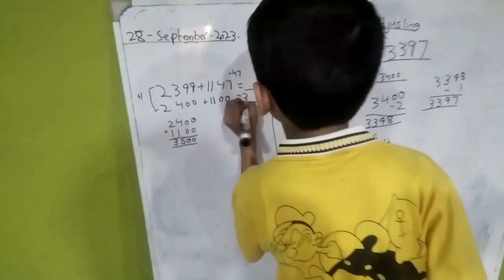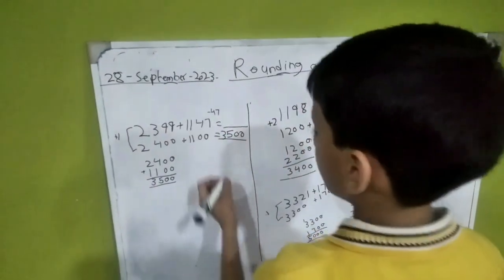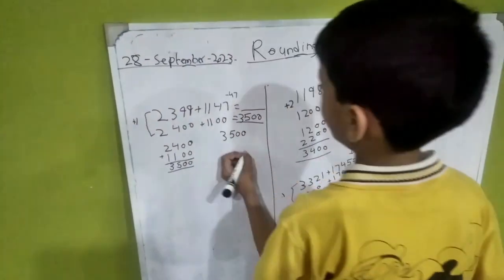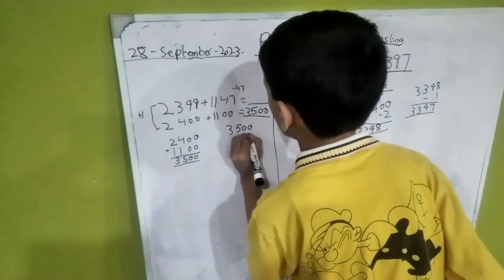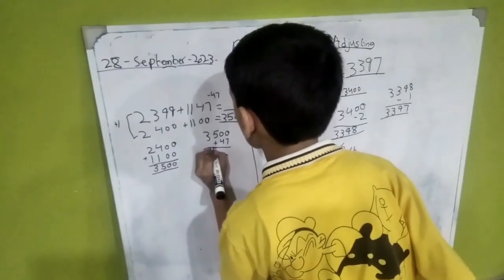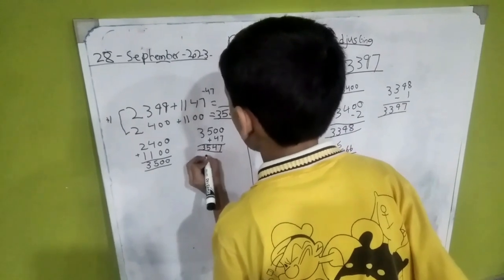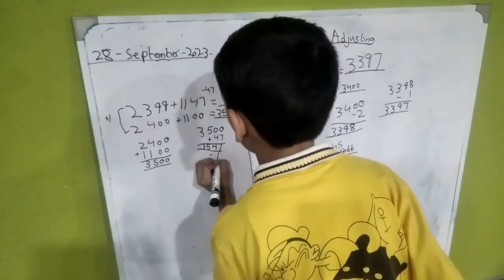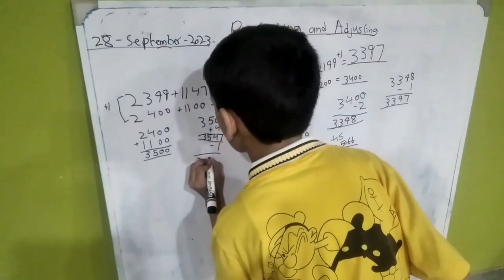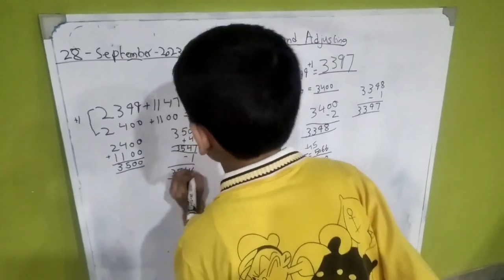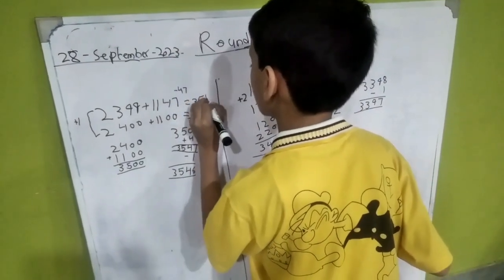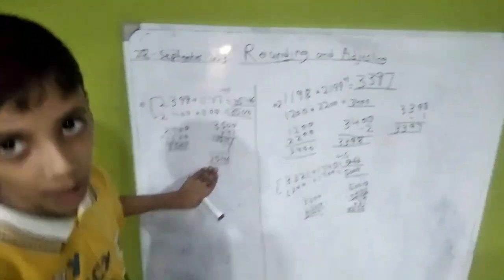So I will write here. Now I will minus with 57, and then I will minus with one. So this is my actual answer.